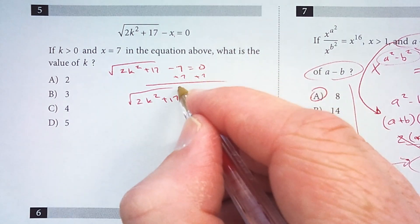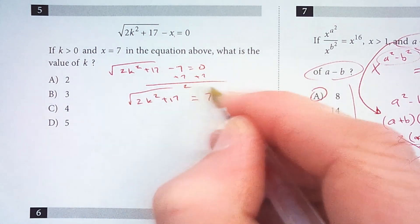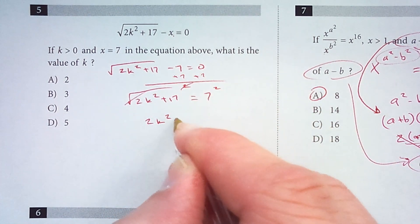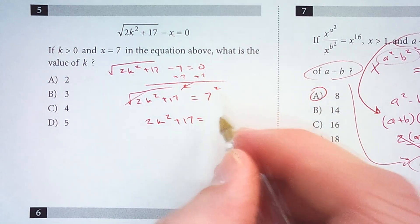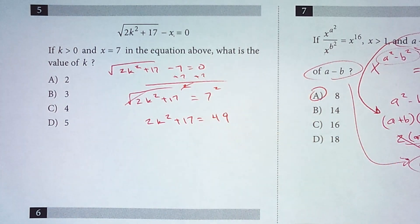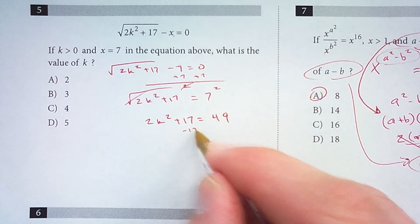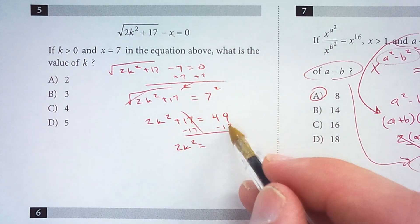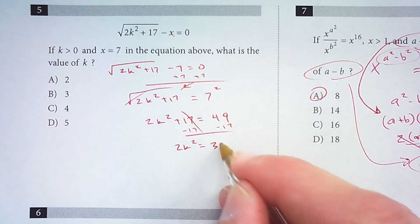Then I will square both sides to cancel out this square root. So now I have 2k squared plus 17 equals seven squared which is 49. Now subtract 17. 2k squared equals 49 minus 17, that is 32.